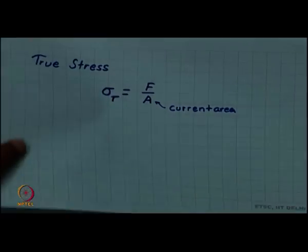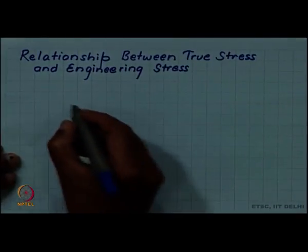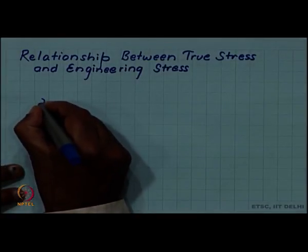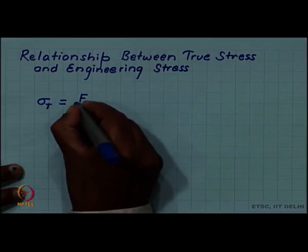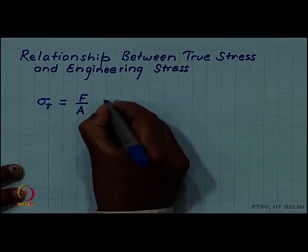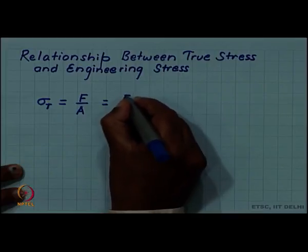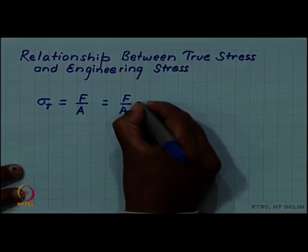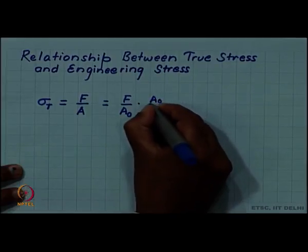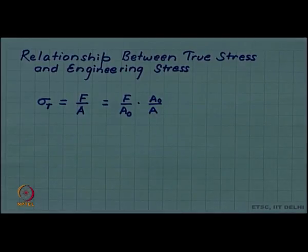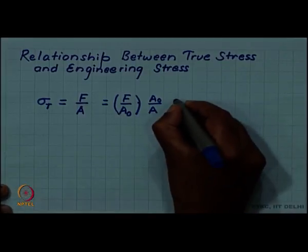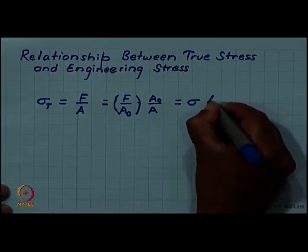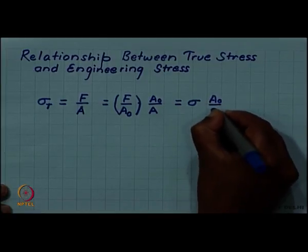You can establish a relationship between the two by noting that sigma T was F by A. If I want to relate it to the engineering stress I bring in A naught — I simply multiply and divide by A naught to get this expression. For the first factor in this expression we can write it as the engineering stress, so it is engineering stress times A naught by A.